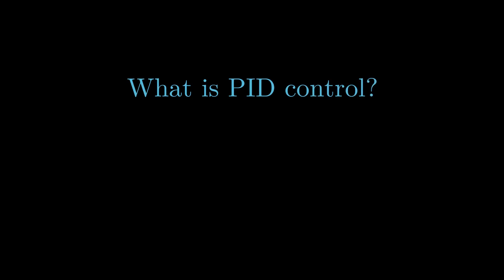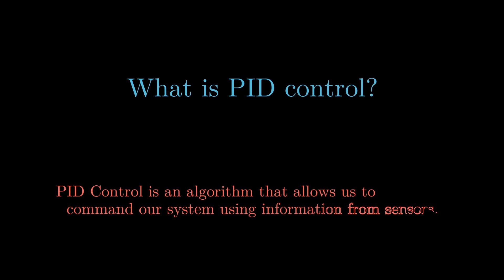PID control is a technique that uses our system's desired and measured states to give us the most appropriate command to send to our motor or other actuators.